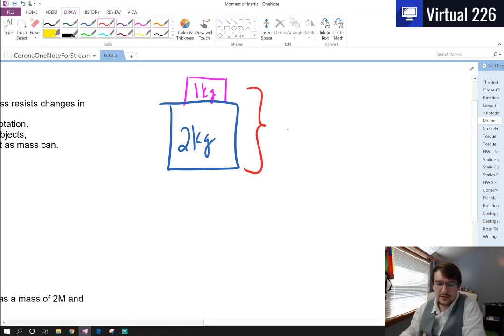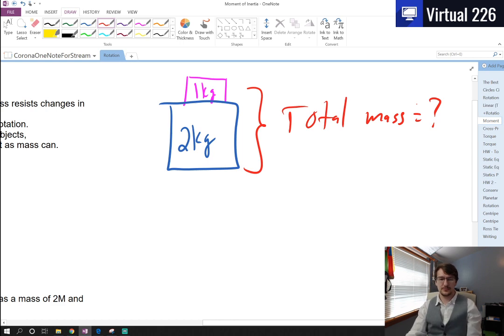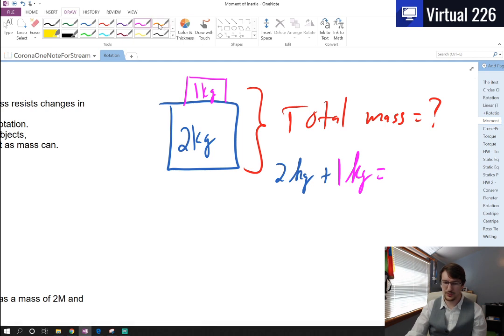If I asked you to figure out the total mass of the blocks together, you would just say the total mass is two kilograms plus one kilogram, which equals three kilograms.